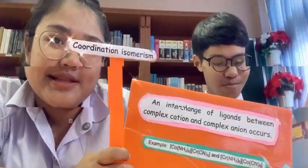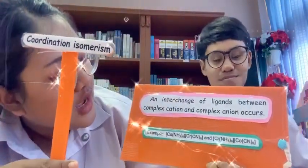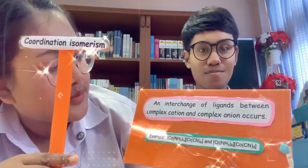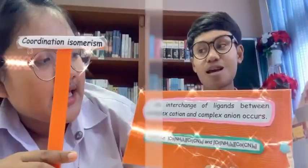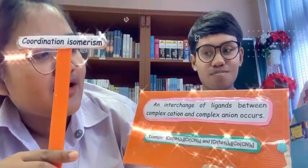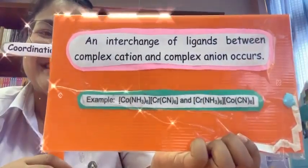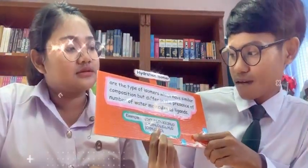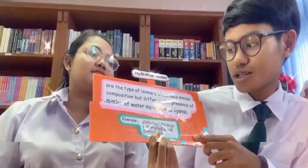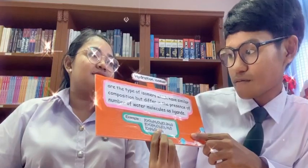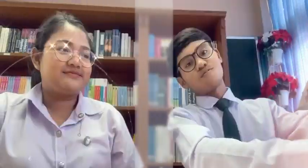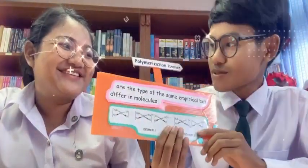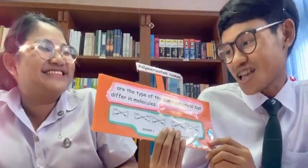The next type is coordination isomerism. And the next one involves the number of water molecules as ligands — hydrate isomerism. And the last one is polymerization isomer.